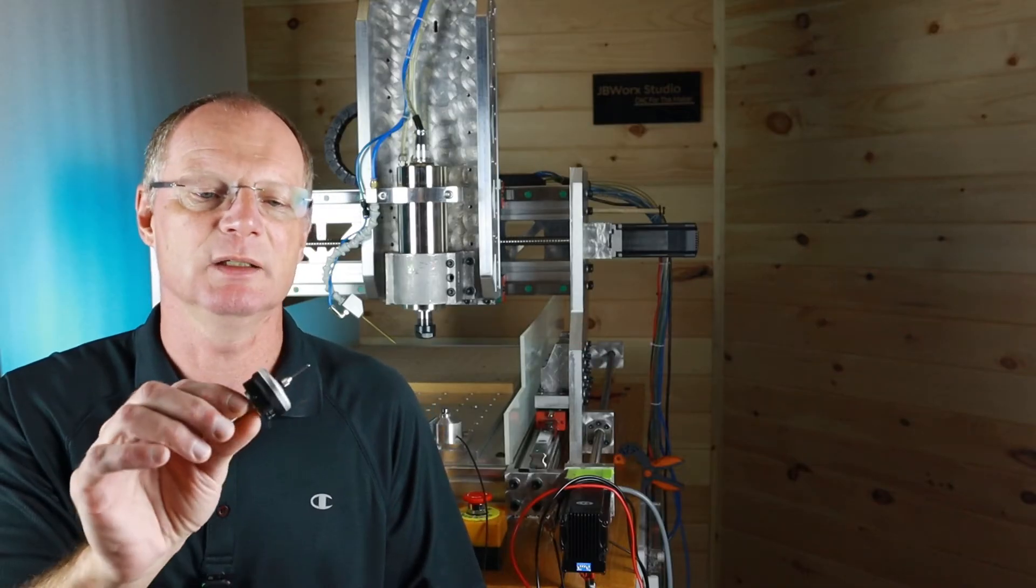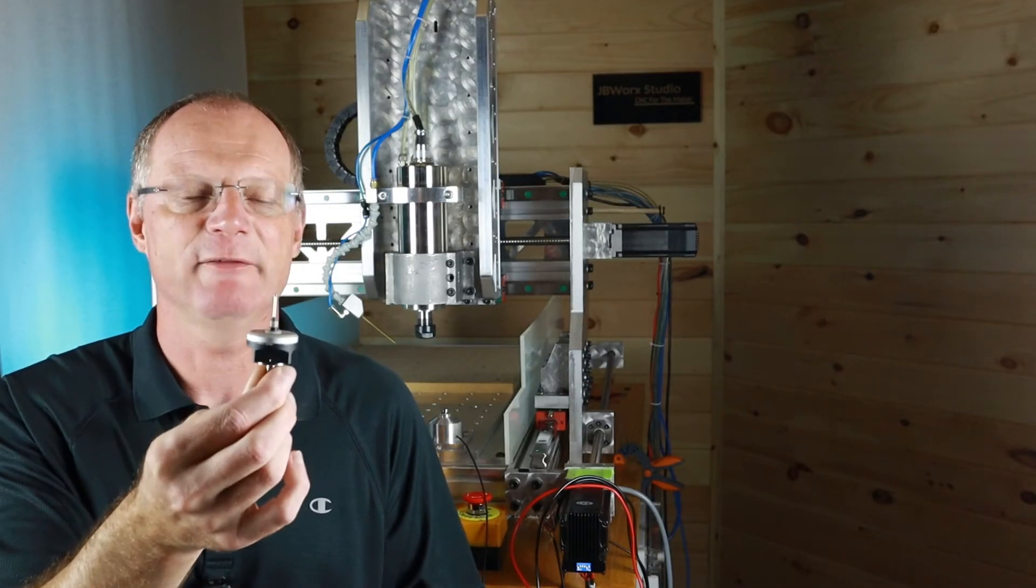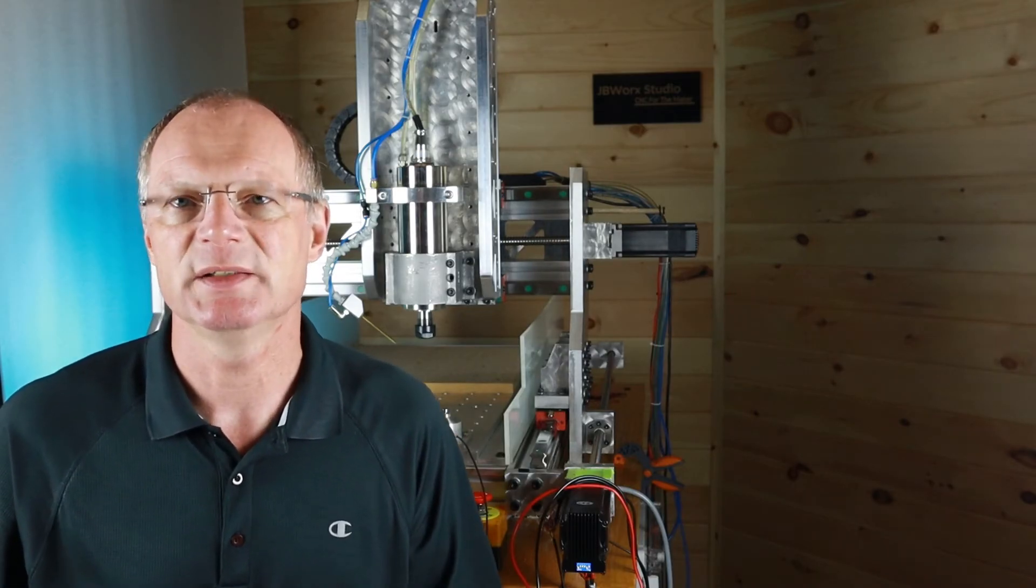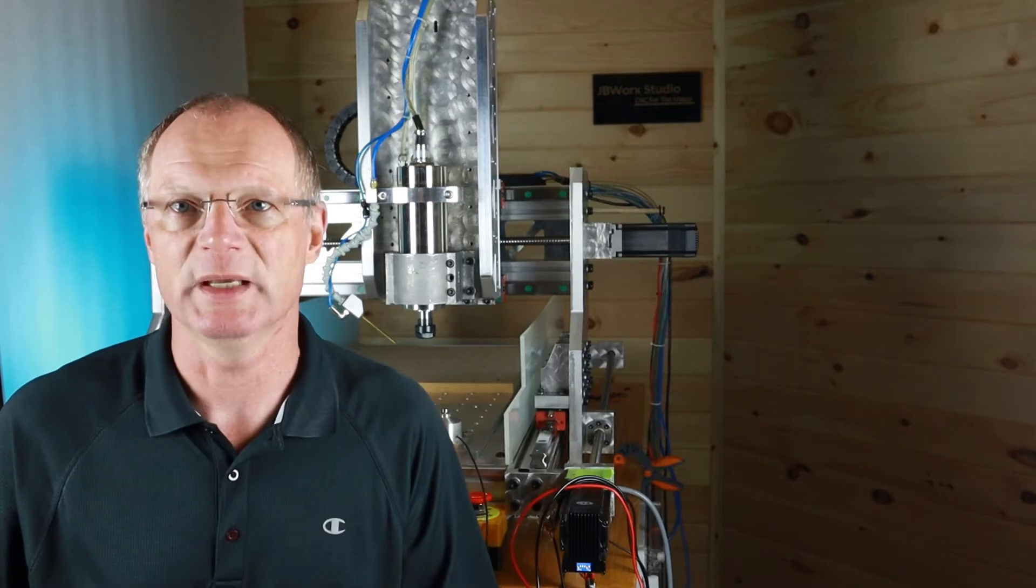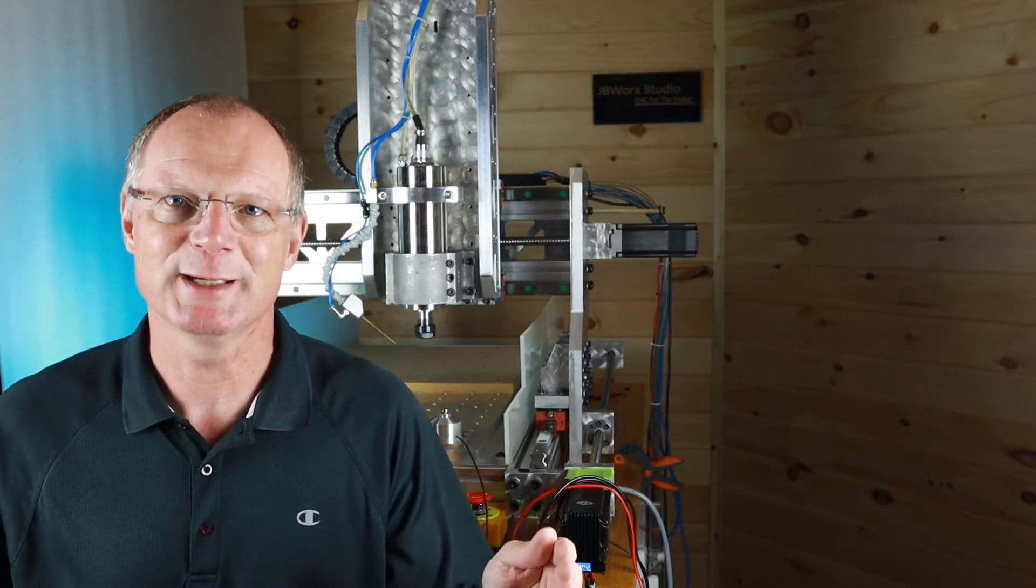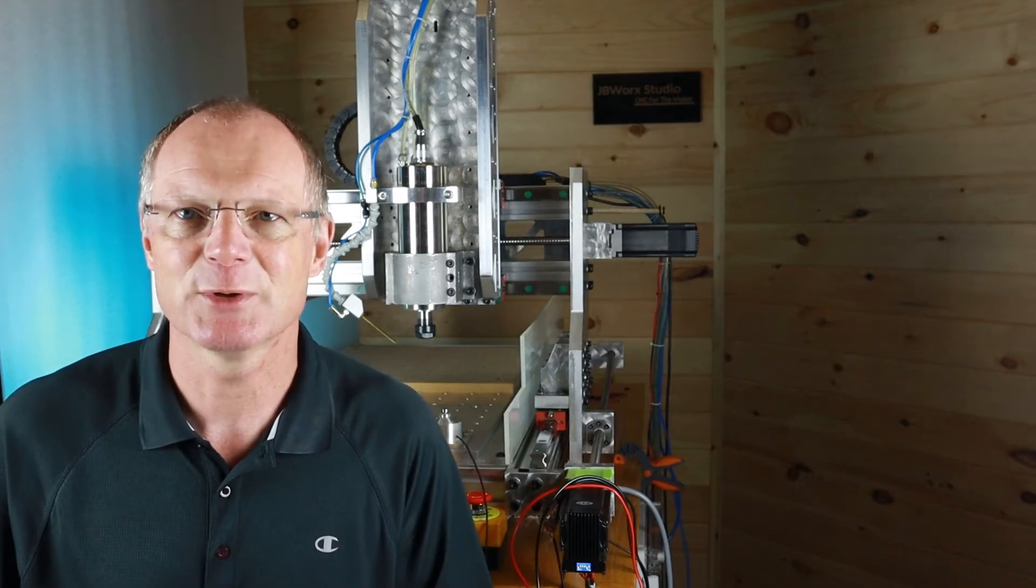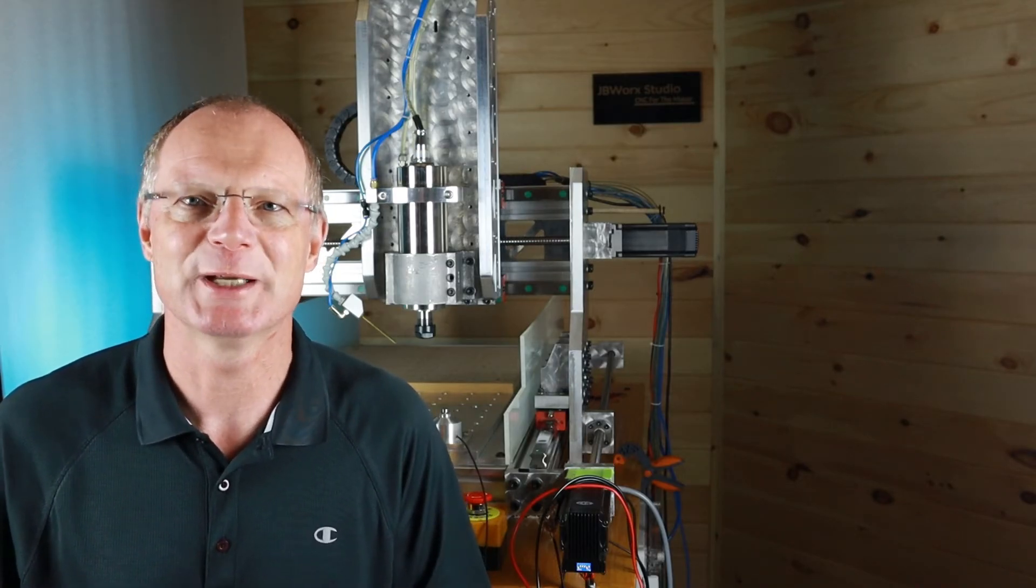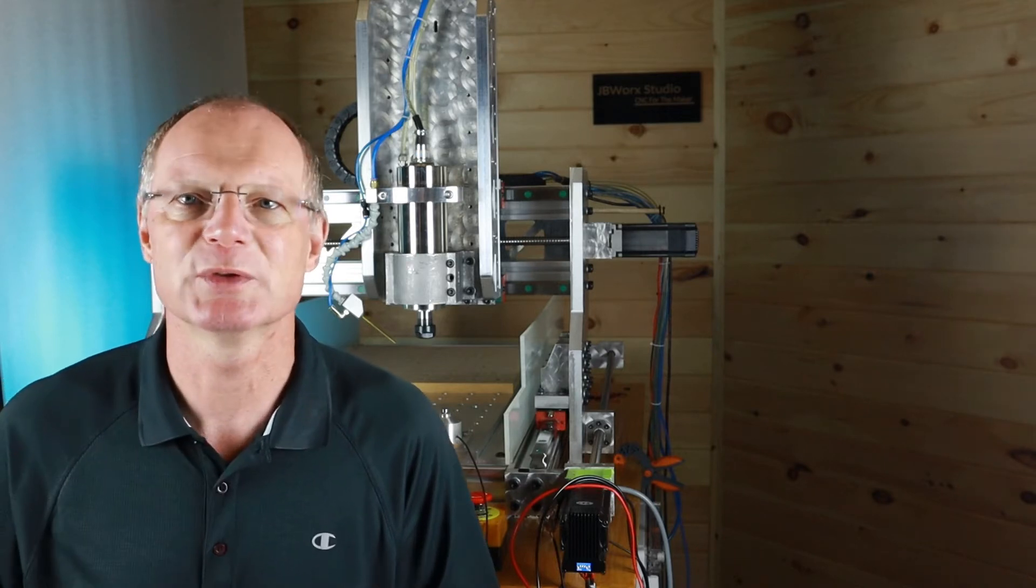So the main advantage of adding a 3D touch probe, an active one like I have here, is that the whole process of setting XYZ zero is now completely automated. And if you've ever broken a tool by setting up the X zero or Y zero by going over too far and breaking it off, then you know what I mean. That cannot happen when you use one of these gizmos.